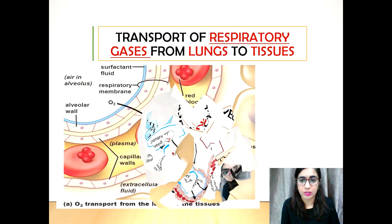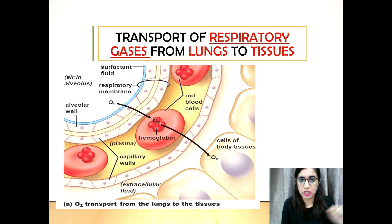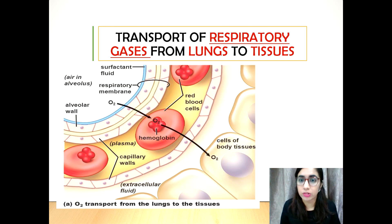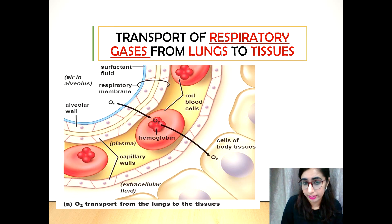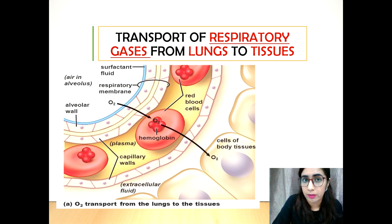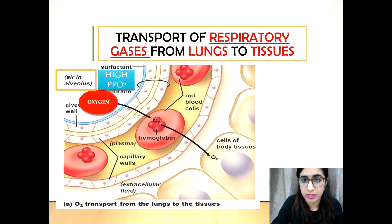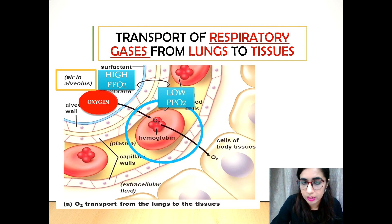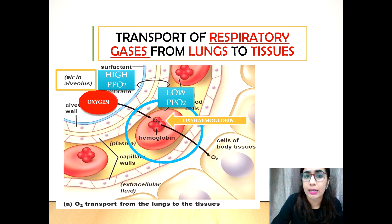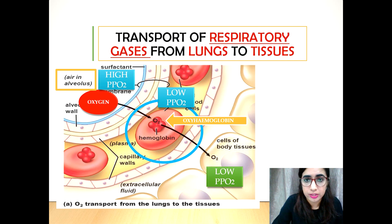Next is the transport of respiratory gases from the lungs to the tissue. Oxygen diffuses from the alveoli, which has a high partial pressure of oxygen, into the blood capillaries, which has a lower partial pressure of oxygen. When it diffuses into the capillaries, it binds with the hemoglobin in the red blood cells to form oxyhemoglobin.